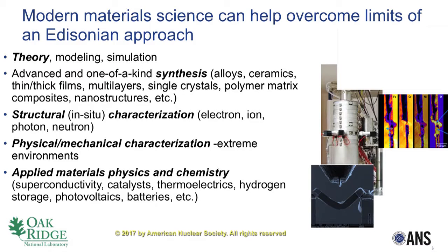What do I mean by modern material science? Material science as a discipline is evolving every day. Five years ago we didn't have our current understanding of the theory of radiation damage, corrosion, or alloy development. That's bolstered by growth in modeling and simulation, new tools, new techniques. We also have the ability to develop and synthesize new alloys, ceramics, multilayers, thin films, nanostructures — much quicker, much faster, much more efficiently.